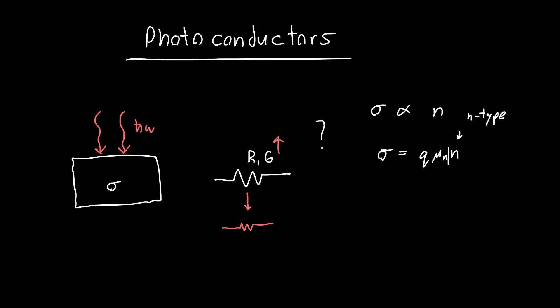So if we can change the number of carriers inside this semiconductor or the carrier density by adding carriers through injecting light, we're going to generate a bunch of electron-hole pairs inside the semiconductor.